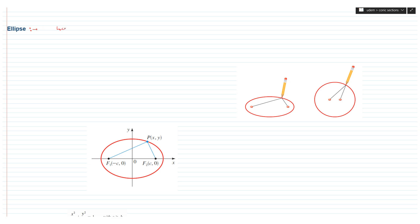Let us fundamentally define the ellipse. The geometrical definition of an ellipse is that it is the locus of a point whose sum of distances from two fixed points is always constant.